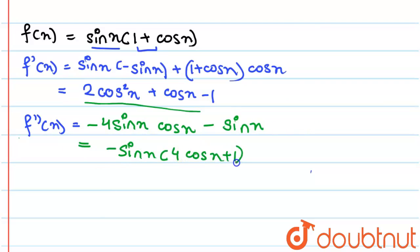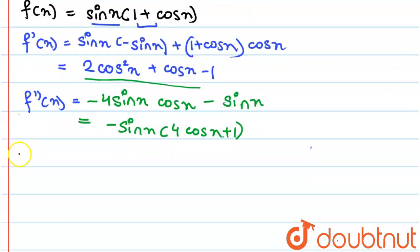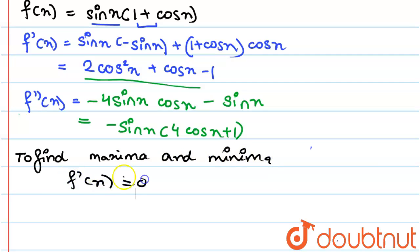Now to find maxima and minima, you take your f'(x) = 0, which equals 2cos²(x) + cos(x) - 1 = 0.